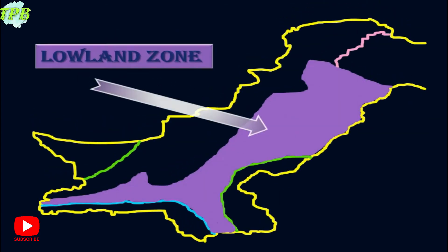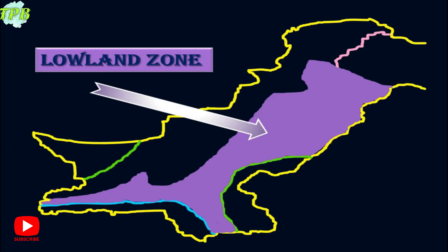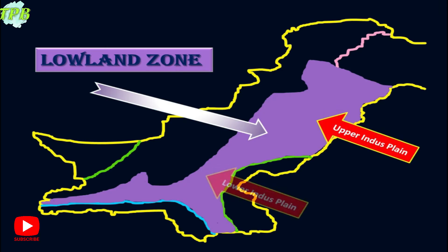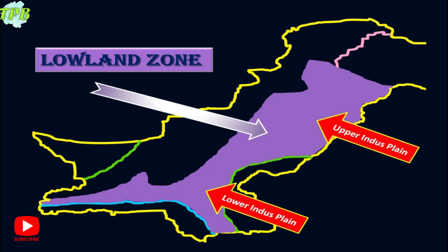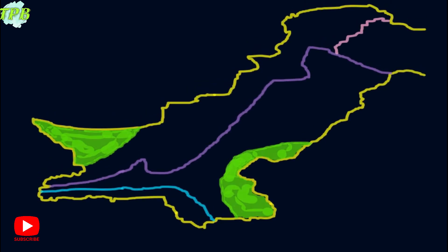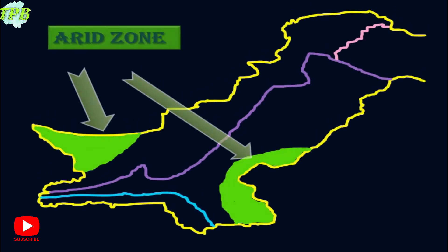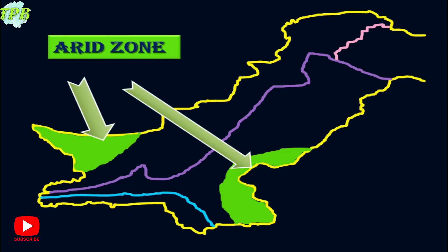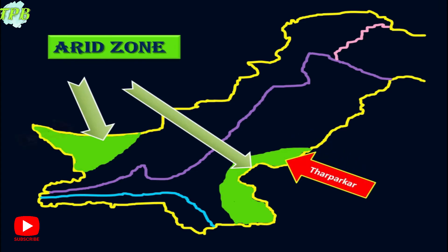The second zone is the lowland zone, which is marked in purple on the map. It includes the upper Indus plain and lower Indus plain areas. The third climatic zone of Pakistan is the arid zone. Arid means dry, so these are mostly desert regions of Pakistan. It includes the Tharparkar desert and the Kharan desert.